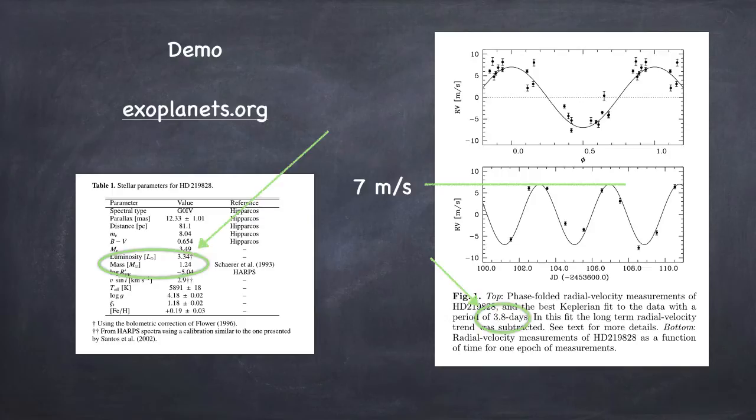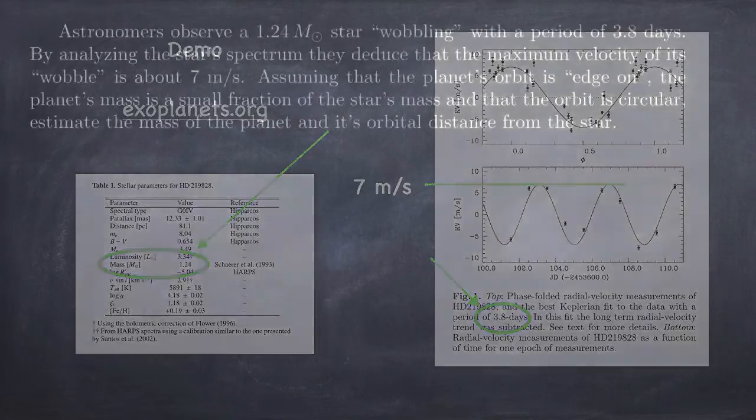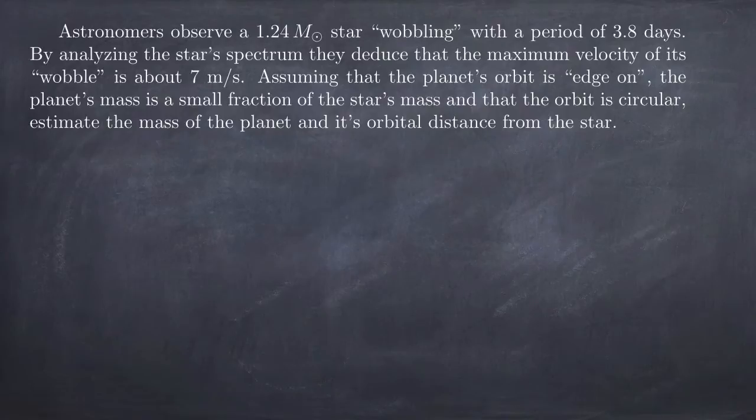Let's take that data and put it into a framing that you might find in a homework problem at the end of the chapter in your textbook. Astronomers observe a 1.24 solar mass star wobbling with a period of 3.8 days. By analyzing the star's spectrum, they deduce that the maximum velocity of its wobble is about 7 meters a second. Assuming that the planet's orbit is edge-on, the planet's mass is a small fraction of the star's mass, and that the orbit is circular, estimate the mass of the planet and its orbital distance from the star.